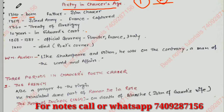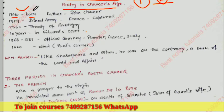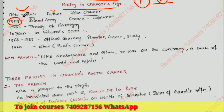Chaucer was born in 1340 — we have discussed this already in the previous video, please watch it to follow the whole series. His father's name was John Chaucer. In 1359 he joined the army and went to France, where he was captured.